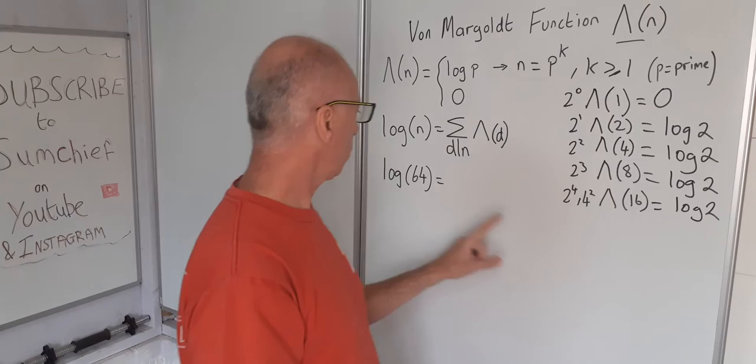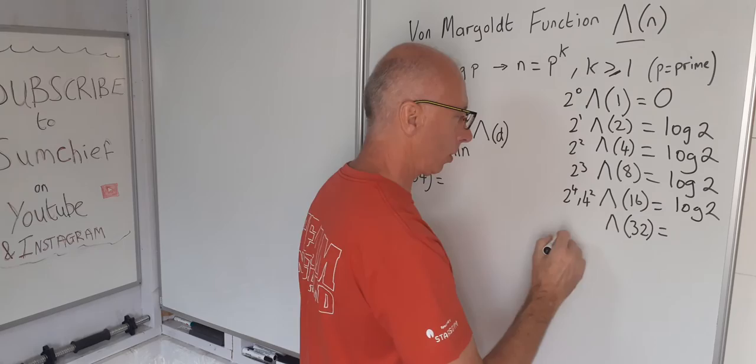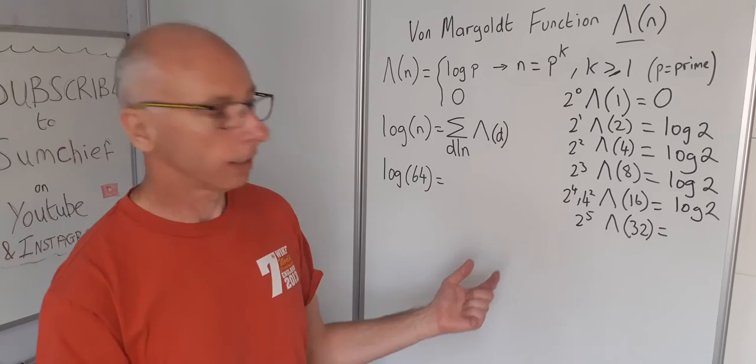Let's try the next one. It's going to be 32. So 32 is going to be 2 to the power of 5. So again log of 2, k is 5 in this occasion.